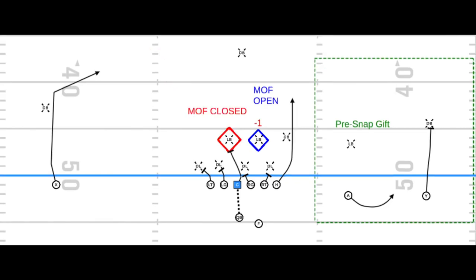Here's a better picture of middle-of-the-field closed coverage with a one-high safety. The pre-snap gift is taken away, and the overhang defender is bumped into the box, giving bad numbers for the run game regardless of whether the minus-one linebacker declares into the run fit. The quarterback, seeing that, works to his MOFC read — the first linebacker play side of that overhang — and knowing the overhang is tucked in, he'll influence him with his eyes and likely pull the ball to replace him on the glance route.